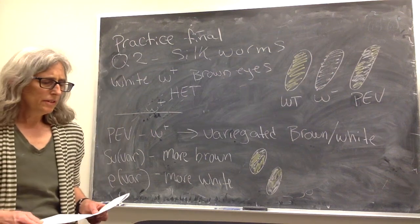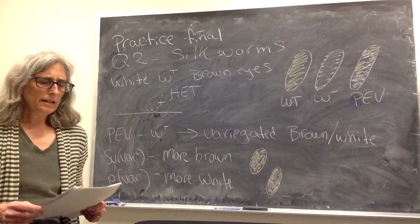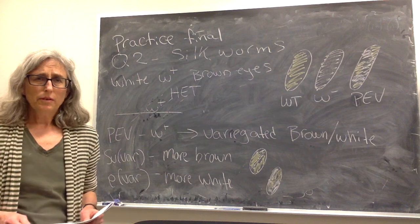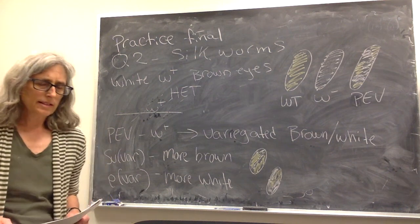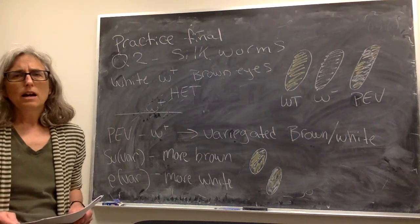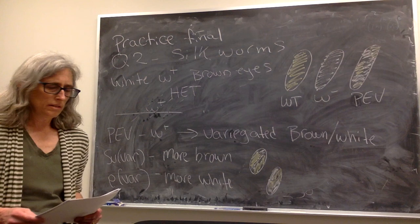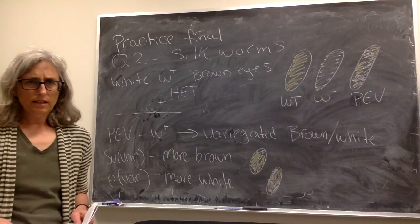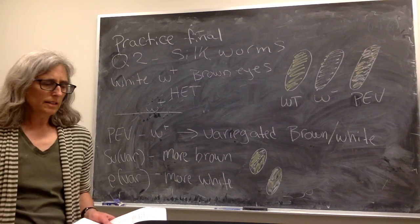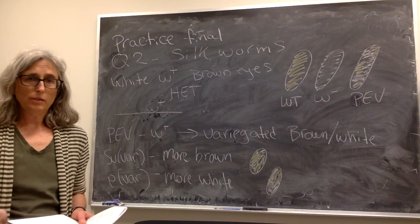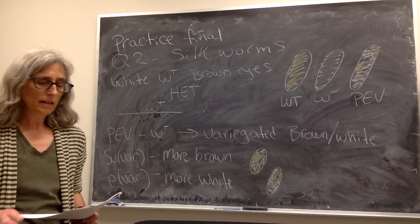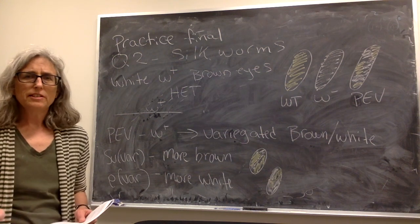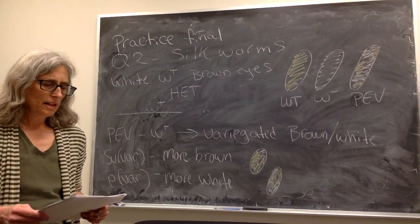I'm going to go over the practice final. I'm going to start with question two, which concerns the silencing of the heterochromatin in the silk business. The idea of this question is that you are working in the silk business, raising silkworms to make silk, but you're having a problem because some of your genes are being inappropriately silenced.